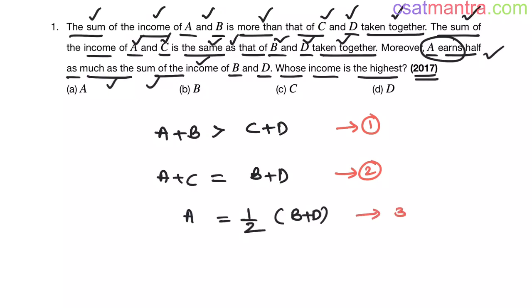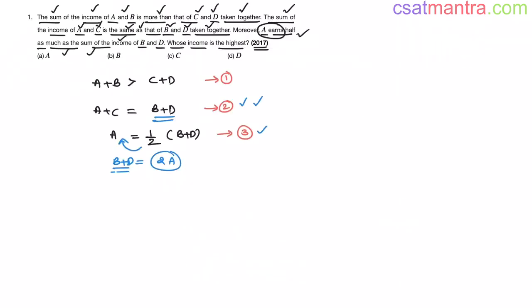If you are able to write like this, 70% of the problem is done. From Equation 3, A = (B + D) / 2, so B + D = 2A. In Equation 2, we have B + D — let's substitute: A + C = 2A. Bringing A to the other side: 2A − A = A, so C = A.